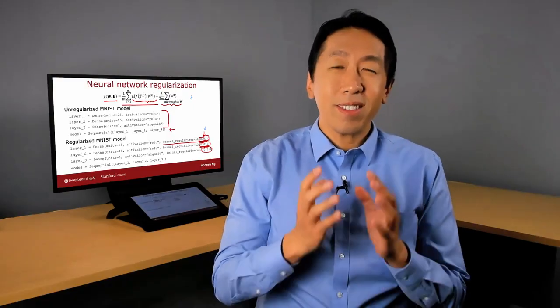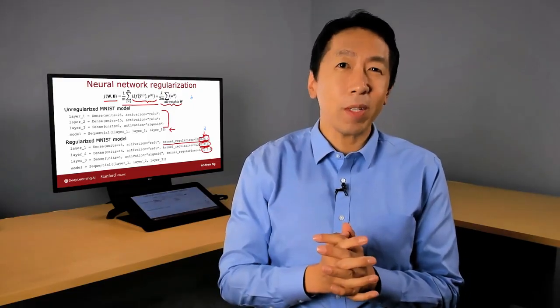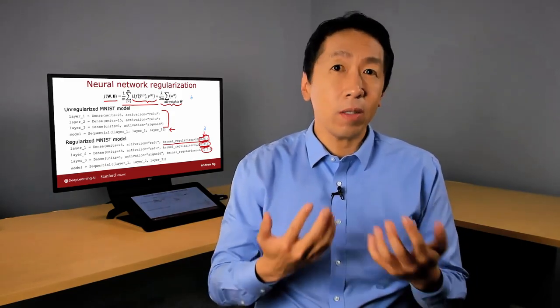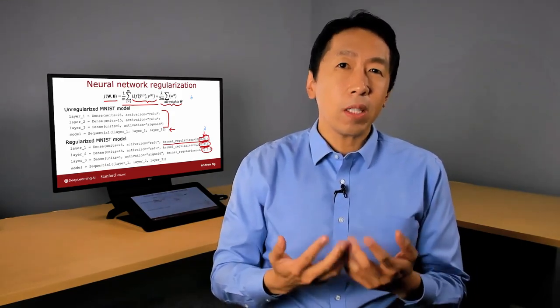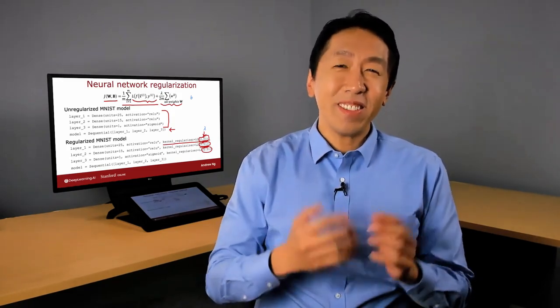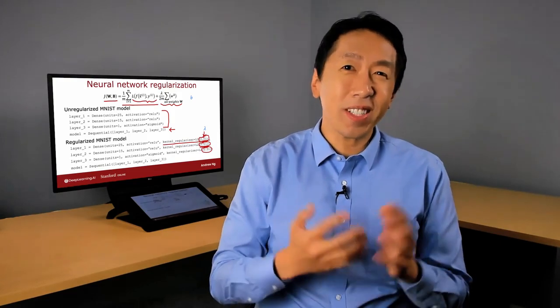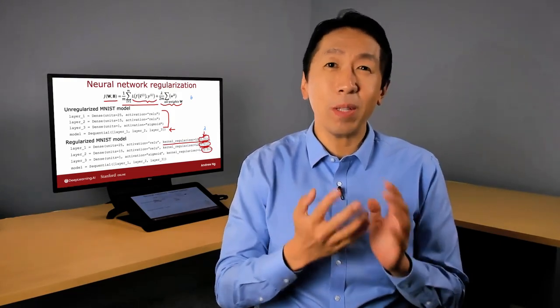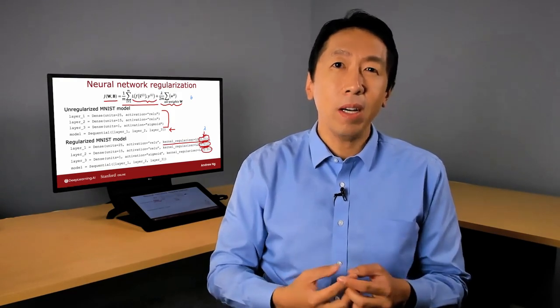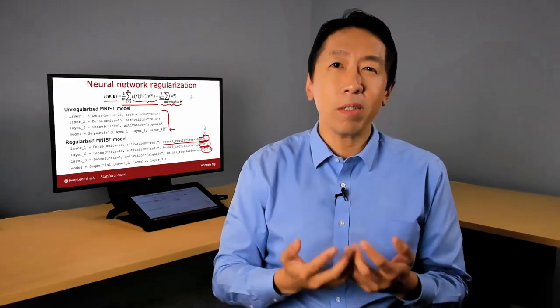So to summarize, two takeaways I hope you have from this video are, one, it hardly ever hurts to have a larger neural network so long as you regularize appropriately. One caveat being that having a larger neural network can slow down your algorithm. So maybe that's the one way it hurts, but it shouldn't hurt your algorithm's performance for the most part. And in fact, it could even help it significantly.